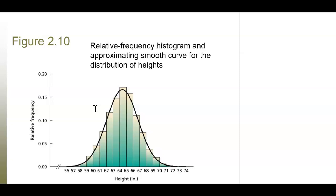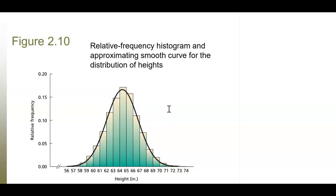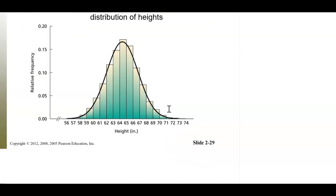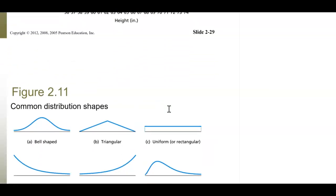This example uses the heights of 3,264 female students at a midwestern college. Height is considered very normally distributed — the majority of the population falls near a common height, with a few people much shorter and a few much taller. It shows a very nice normal distribution, but not everything is normally distributed or has this bell-shaped curve.